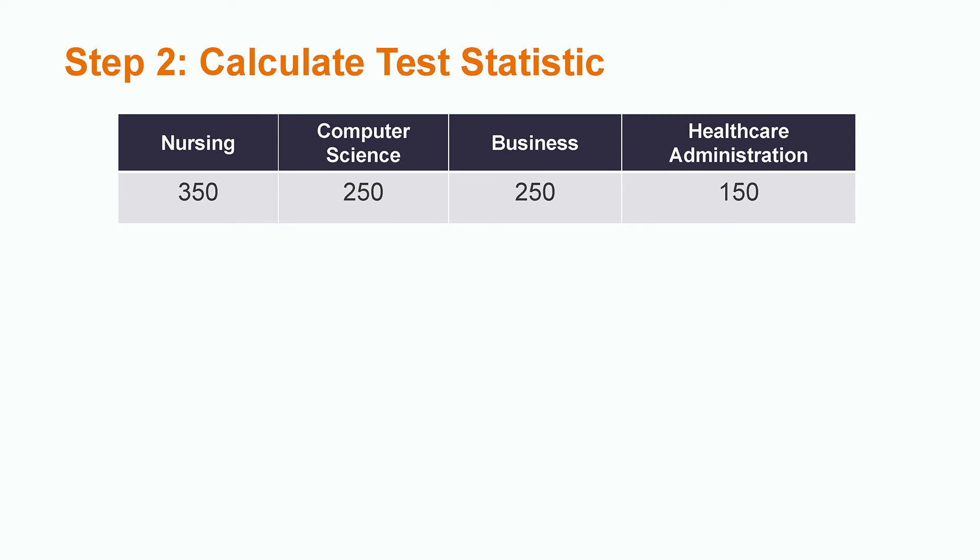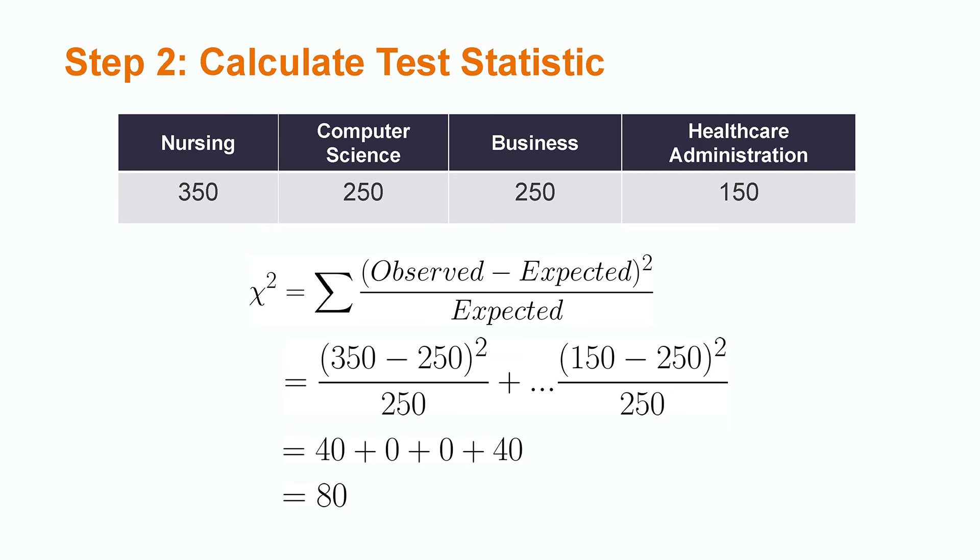It is now time to calculate our test statistic by using the formula: chi-squared equals the sum of the observed value minus the expected value squared divided by the expected value.